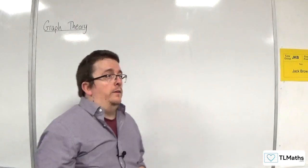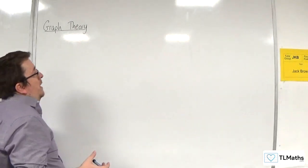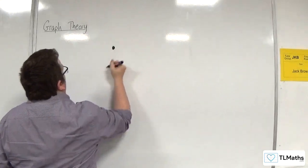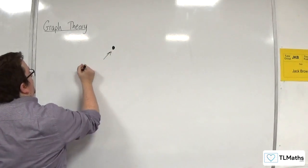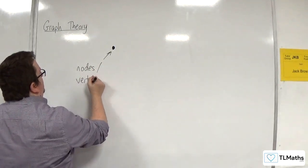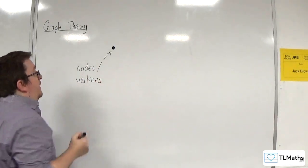So what is a graph? What does it look like? A graph is made up of nodes, or we otherwise refer to them as vertices. So nodes and vertices both mean the same thing.